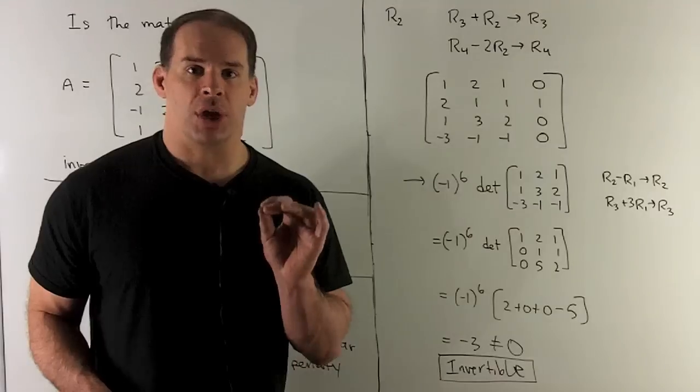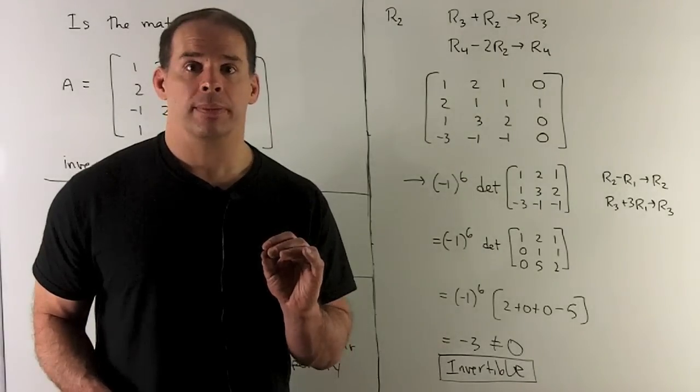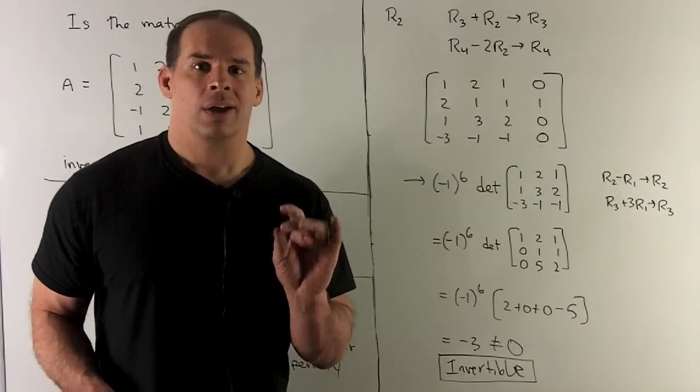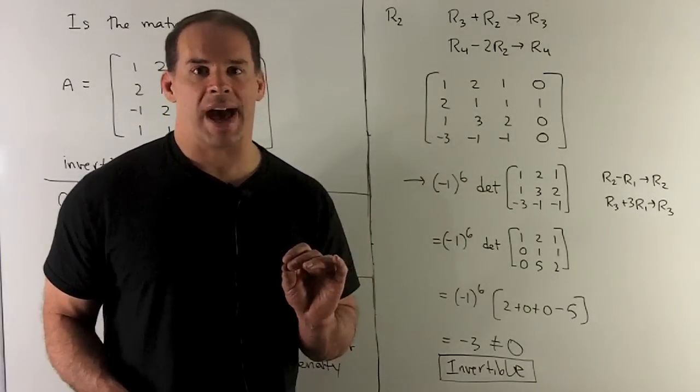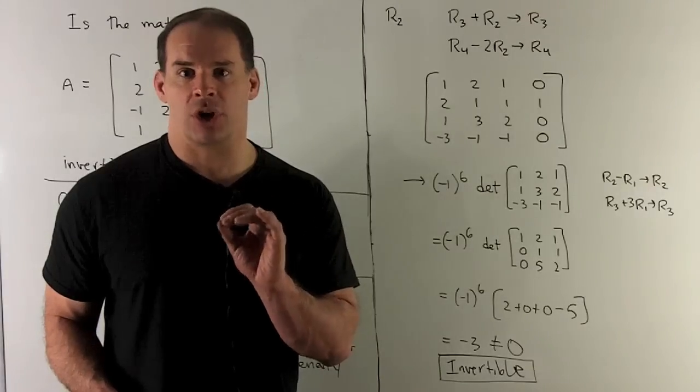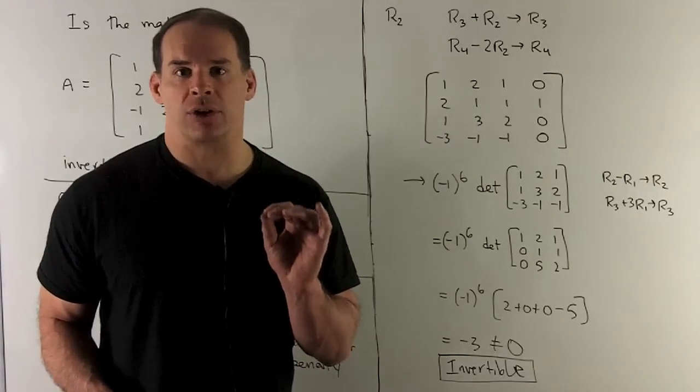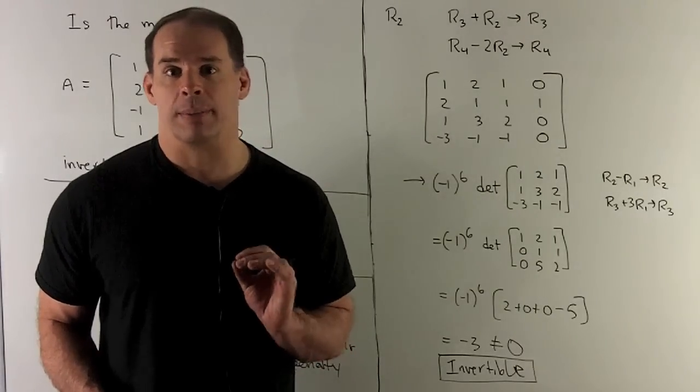That's not equal to 0, so my matrix is invertible. Now, if we want to check our work, we have another exercise where we just compute this determinant with a straight-up cofactor expansion. And that's going to give us the minus 3 also.